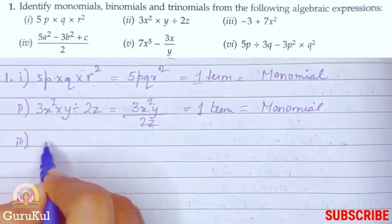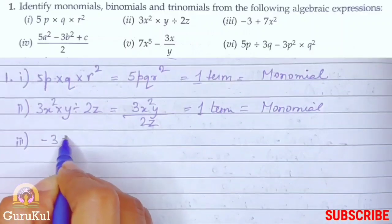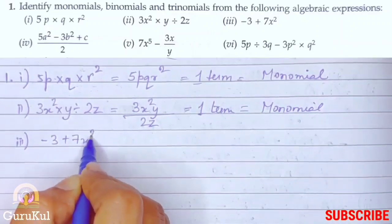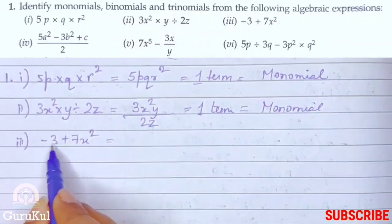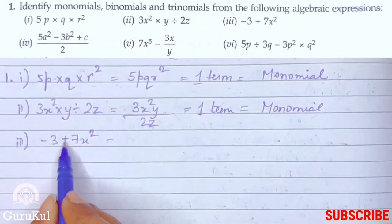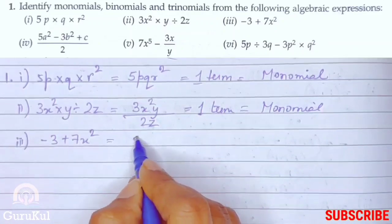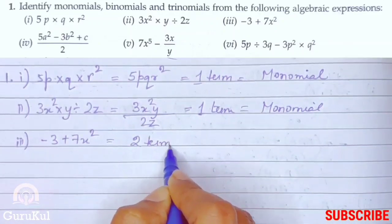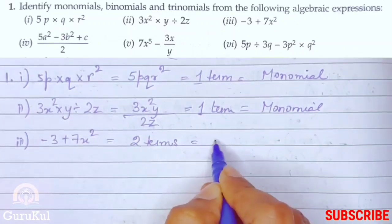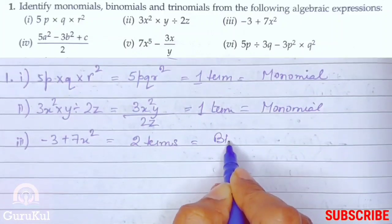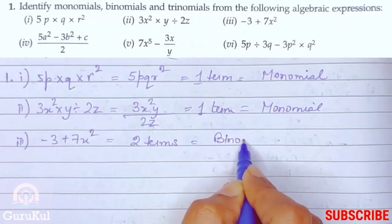Third part, it is minus 3 plus 7x square. See, two numbers have been separated by a plus sign. Hence these are two terms. So that is, two terms that gives us binomial.